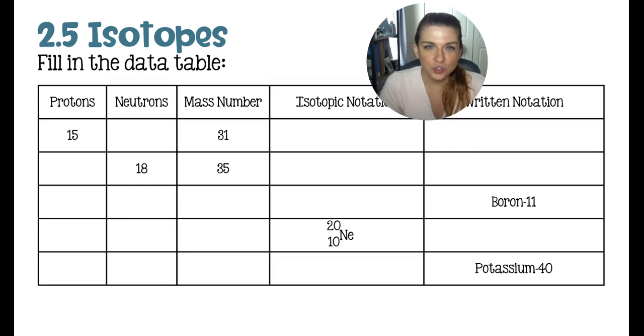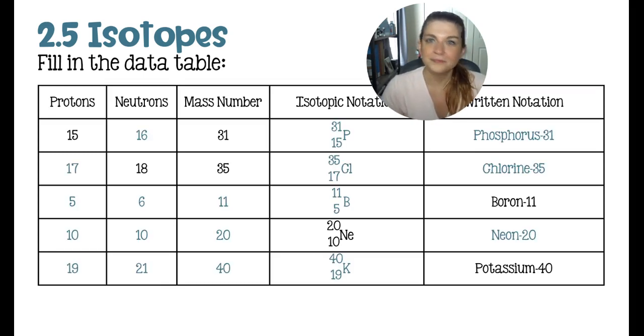For lesson 2.5 on isotopes, you should be able to fill out this data table. And here is that data table. I will go over neon and potassium for you, which were the last two. So for neon, we were only given the isotopic notation. This number on the bottom, the 10, represents the number of protons, but it also represents the atomic number. And for atoms, it also represents the number of electrons. Secondly is the 20, which represents the mass number, which is the sum of the protons and neutrons. In order to find the number of neutrons, you would do the top number minus the bottom number or the mass number minus the atomic number. In this case, it just happens to be the same. It's a coincidence. Isotopic notation is always followed by the element's symbol. And then to write that out, we have the element's name and the mass number.